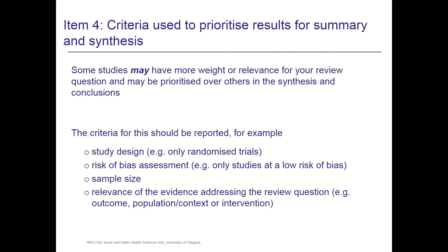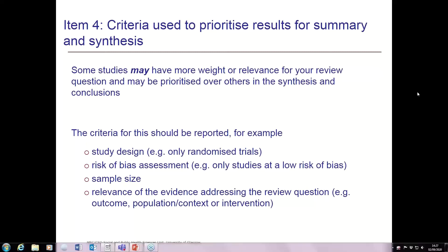If that occurs, we want to be really clear why these studies merit special attention and report that clearly. It may be according to study design — for example, what the RCTs amongst our studies said — or it may be due to risk of bias, highlighting studies with low risk of bias. Or it may be that some studies had far larger, more robust sample sizes, or that the subject of those studies was more directly relevant to the review question. We should be really clear on why those studies merit that extra weight.